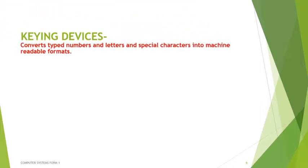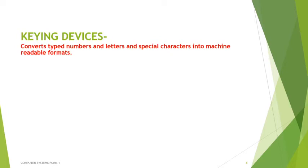Keying devices are gadgets with buttons that can be pressed — used to type. They convert typed numbers, characters, letters, and special characters into machine-readable formats. When you press a letter, a number, or a special character like a question mark, it is converted from what you can see to what the computer can understand.